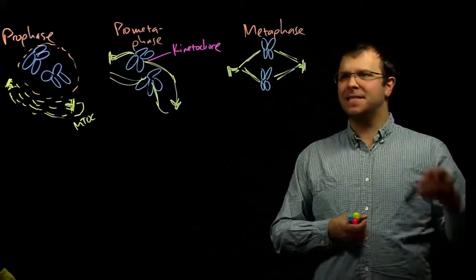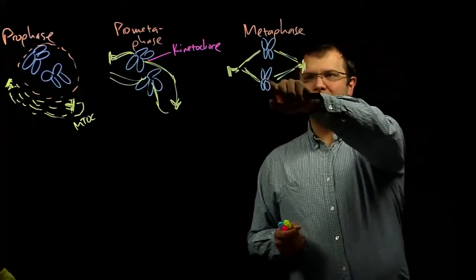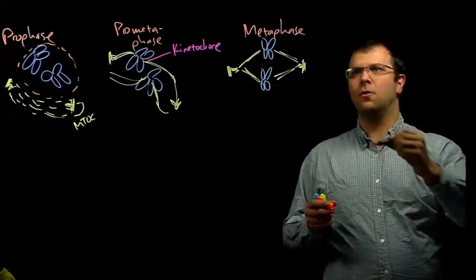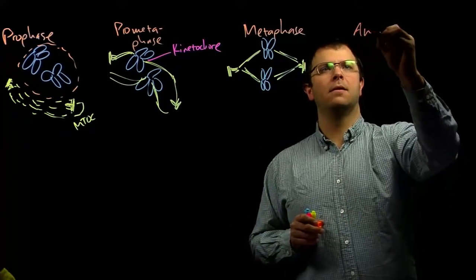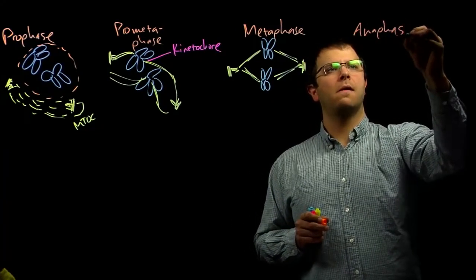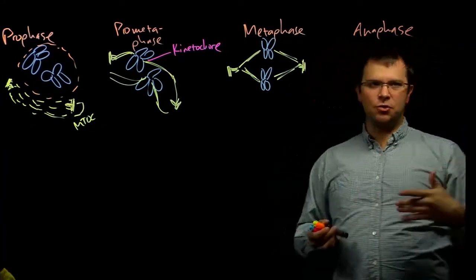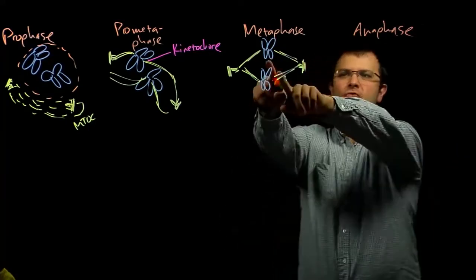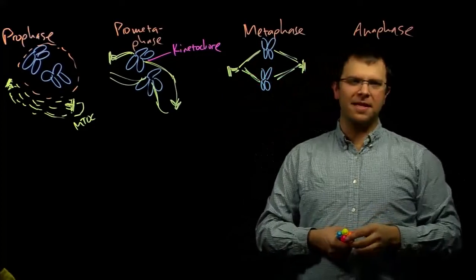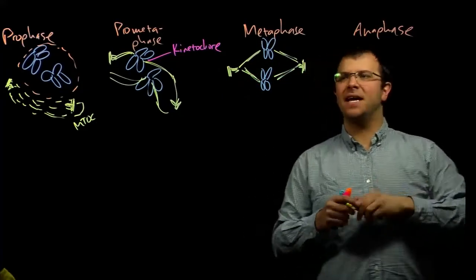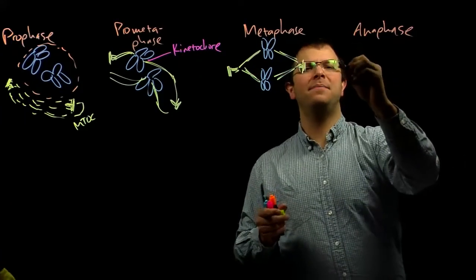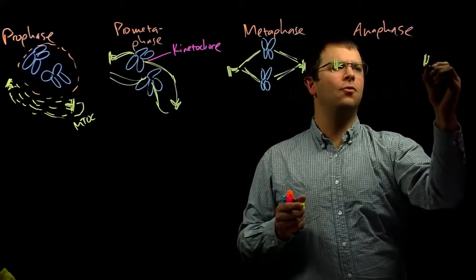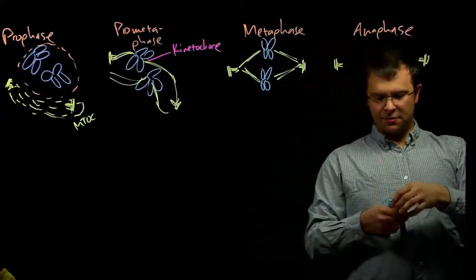Next, the proteins in that kinetochore break down. Because each chromatid is attached to one of the microtubule organizing centers on each side of the cell, what happens when that kinetochore breaks down is the chromatids split.